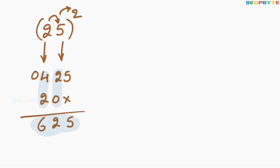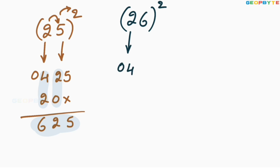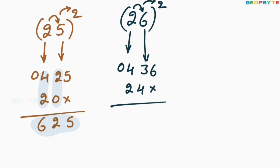Similarly, 26 square: 2 square is 04, 6 square is 36. 2 into 6 is 12, 12 into 2 is 24. Leave the first space, write 24. Add these two values: 6, 3 plus 4 is 7, and 4 plus 2 is 6. Therefore, 26 whole square is equal to 676.